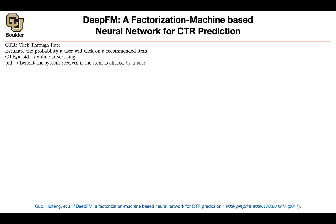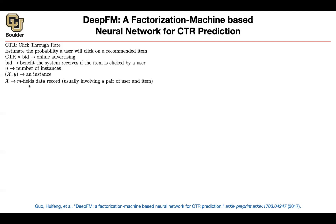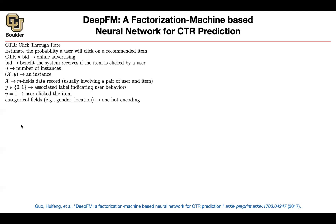You collect data in the past to train this prediction model. There are n instances, where each instance is a pair of features and the corresponding label. Each input data point has m fields of data records, usually in the form of a user-item pair. The labels represent whether the user interacted with that item — did they click on it or not.